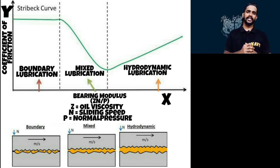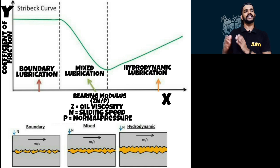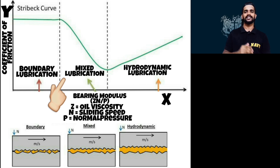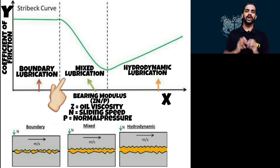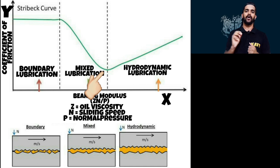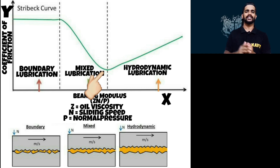As the sliding speed keeps on increasing — that is the speed of the piston — the curve reaches a region known as mixed lubrication. Upon reaching mixed lubrication, because of the increment in sliding speed, the oil film thickness will be very high. At this particular point, the coefficient of friction will hit its lowest point, and there will be hardly any contact between metal and metal — in our case, piston and liner.